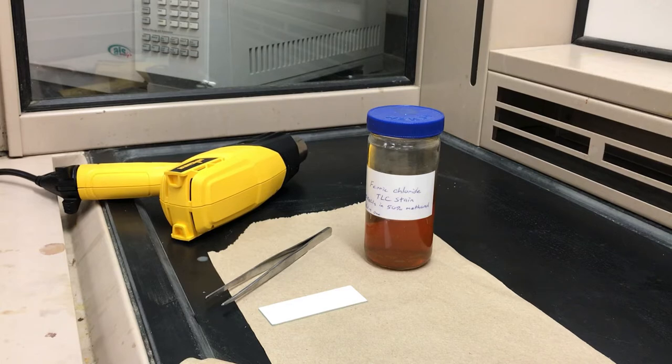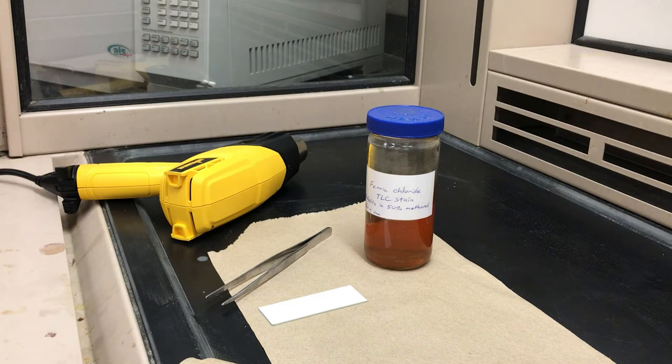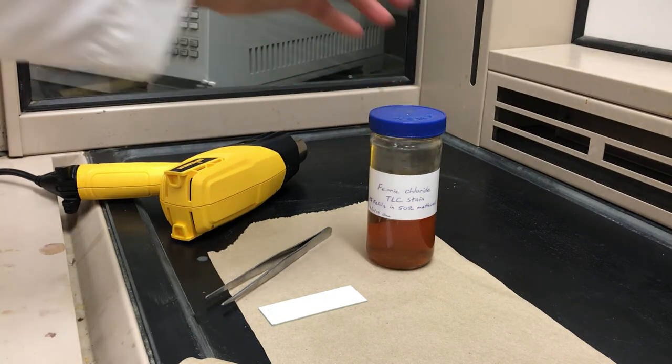Often using some sort of stain that is actually destructive to the compounds, you can only do this once. But sometimes you can visualize things better using these other methods. Iodine is pretty common - people will put the TLC plate into an iodine chamber and then the spots will eventually show up. But there's also a whole slew of different stains that you can use.